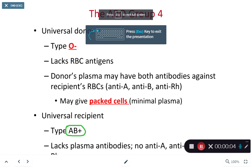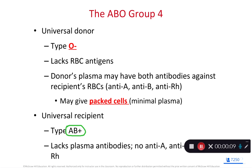We left off with universal donors. When you're donating blood to somebody, it's really important that the recipient does not get any new antigens in their bodies. O negative is the universal donor because that blood type is lacking the antigens — it doesn't have the A antigen, the B antigen, or the rhesus factor antigen.